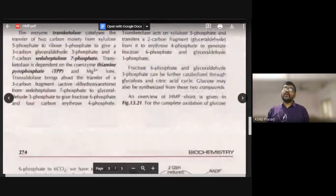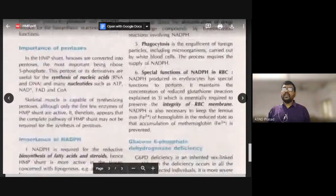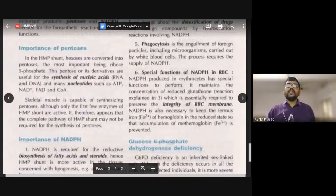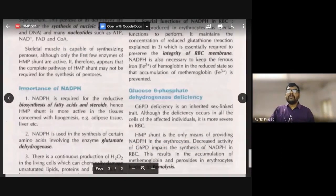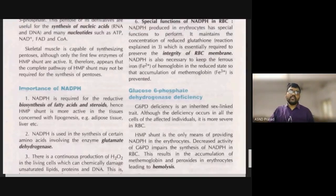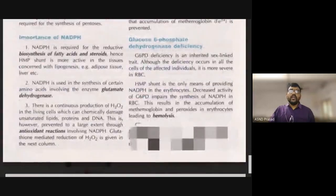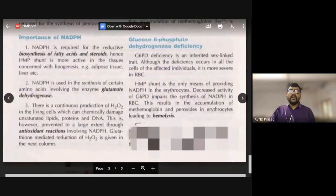The importance of the HMP pathway: the first and most important product is NADPH. NADPH is a critical by-product generated during the oxidative phase of this pathway.